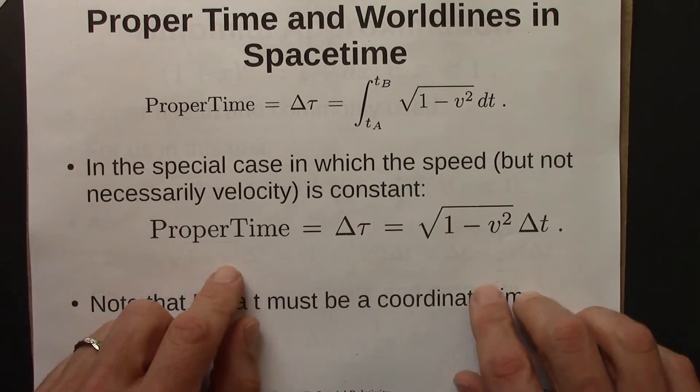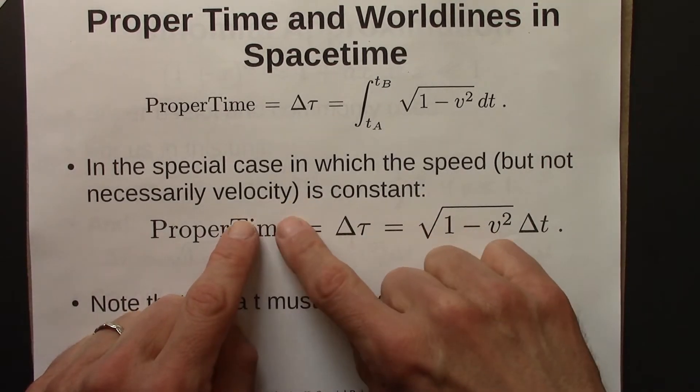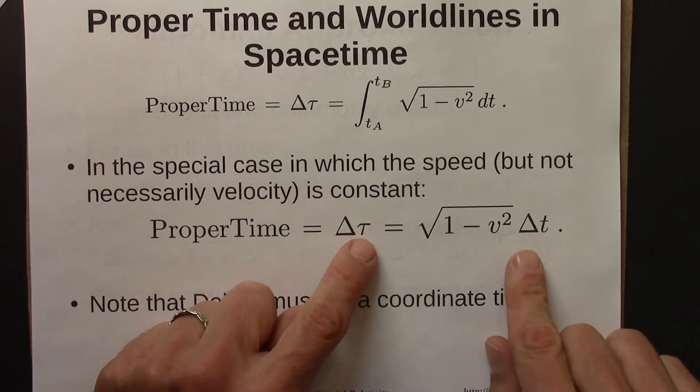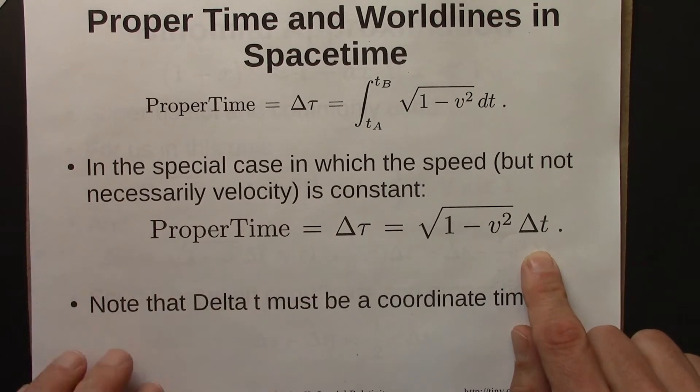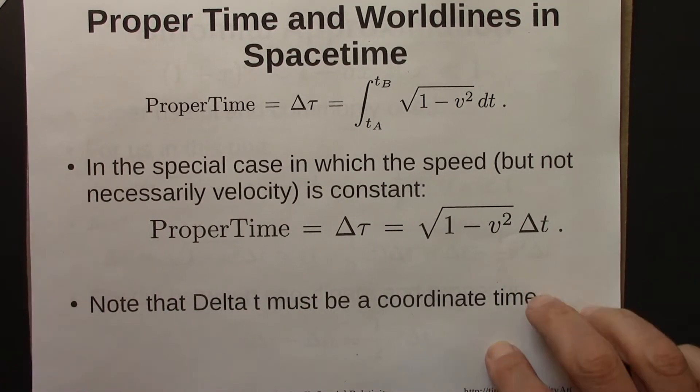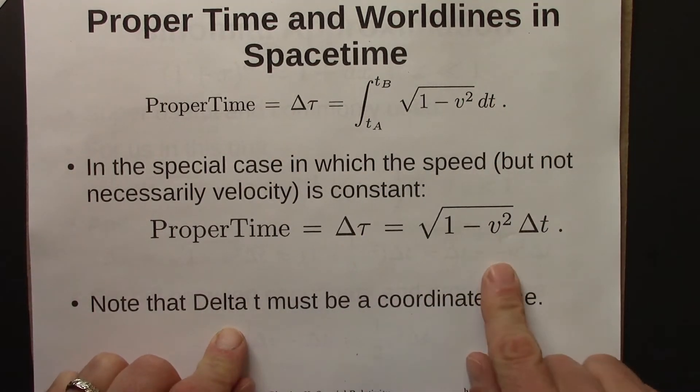So again, here's the calculus version. But in the special case in which v, which is speed, not necessarily velocity, but if we're moving at constant speed, then proper time delta tau takes this pretty simple formula. 1 minus v squared square root times delta t, where delta t must be a coordinate time.